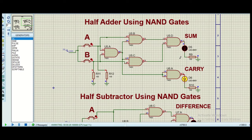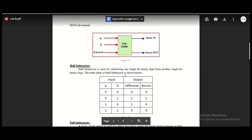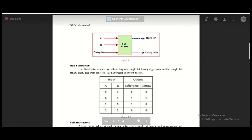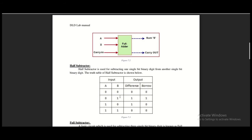NAND gates are universal gates and they can be used anywhere. So now we move on to the next step where we will implement the half subtractor. In a half subtractor, we do not get a carry but instead we get a borrow. When we cannot subtract — like here, we cannot subtract zero from one — so we get a borrow, and then we subtract and get a difference of one.